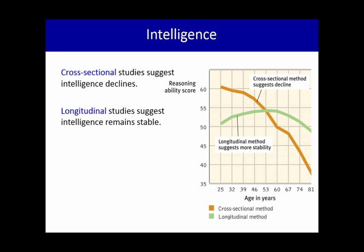It suggests that intelligence is stable across the lifespan. In the longitudinal method, you start off with a group of 25 year olds and then you retest them every seven years. So you test them again when they're 32, again at 39 and so on until they're 81 years old.